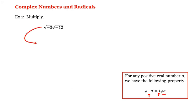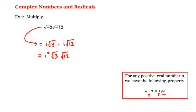That is, this is equal to i times the square root of 3, times i times the square root of 12. Combining the i's, we have i squared times the square root of 3 times the square root of 12. And now combining the radicals, we have i squared times the square root of 36.